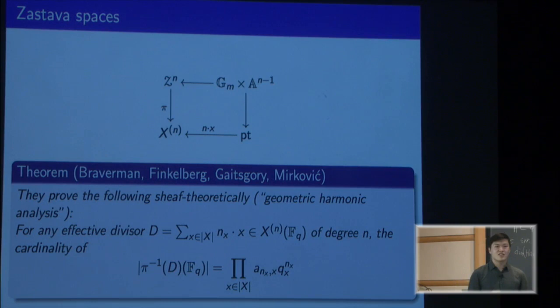Any point on this symmetric power of the curve is some divisor—a bunch of points with multiplicities. If we just count the number of rational points on the fiber at this divisor, then the answer is this Euler product. Each of the terms is just this a_n together with the power of q. This is not a coincidence. From the definitions of these Zastava spaces, there's a geometric reason that the numbers actually correspond.